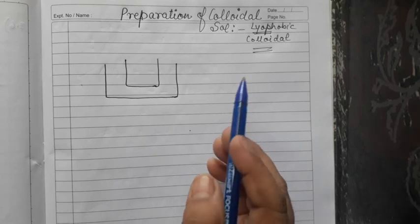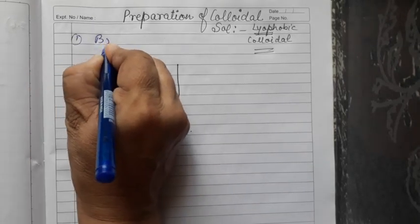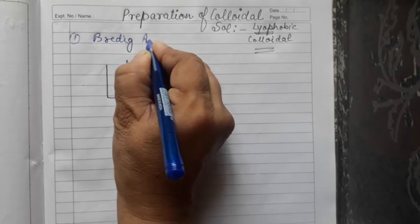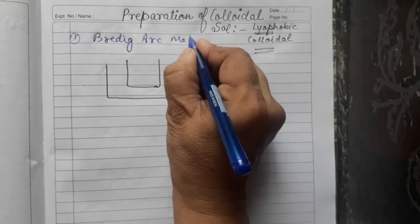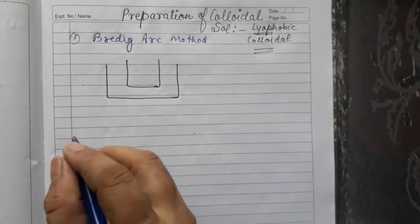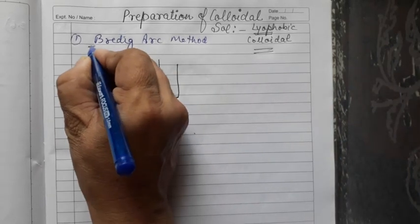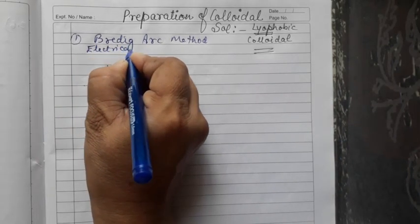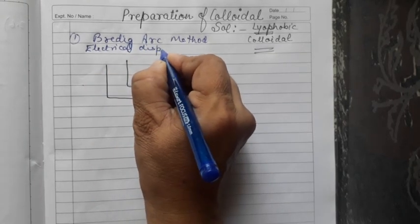The first method we are taking is the Bredig's arc method, which is also called the electrical dispersion method.